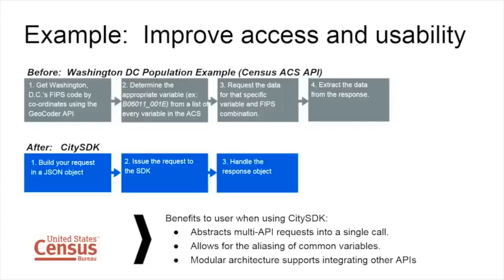With the CitySDK, we try to simplify this process. You can build your request in a JSON object, issue that request one time to the SDK, and it handles the response object. The benefits are: you can do a multi-API request using a single call, getting geo and demographic data all at once. You can pass in a common name as an alias — for example, pass in the word 'population' and the SDK knows that population equals the variable b06011_001e. And because it's a module architecture, you can pull in other APIs as well.